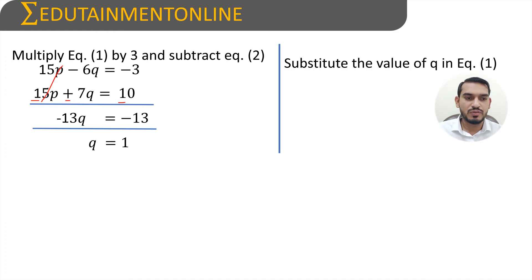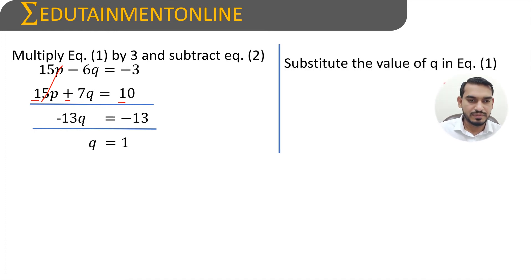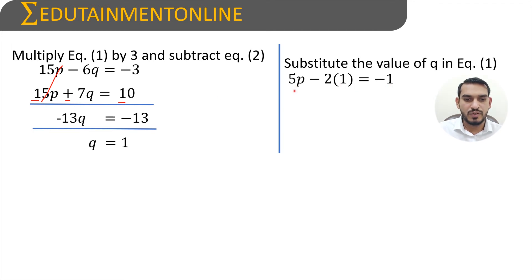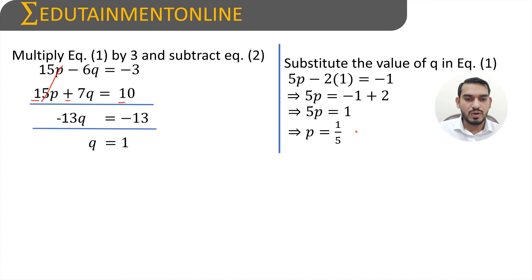Substituting the value of q in equation 1: 5p minus 2(1) equals minus 1, so 5p equals minus 1 plus 2, which is 1. Therefore p equals 1 by 5.